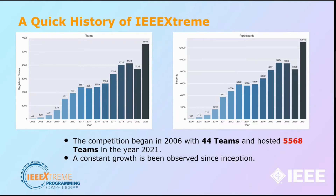Here is a quick history of IEEE Xtreme. As you can see, from 2006 we have had exponential growth. We started off with 44 teams and grew to over 5,500 teams in 2021, with nearly 13,000 participants. The growth of IEEE Xtreme has been truly exponential.